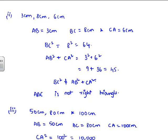find the sum of squares of the other two sides. That is AB squared plus BC squared, which equals 50 squared plus 80 squared. 50 squared is 2500, plus 80 squared is 6400, so overall this equals 8900, which is not equal to CA squared.